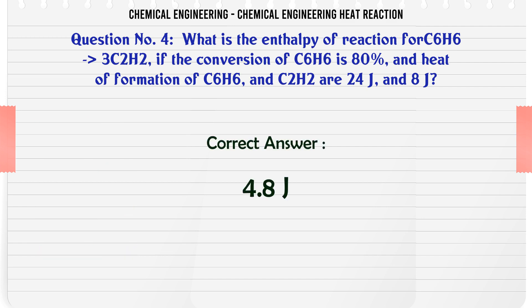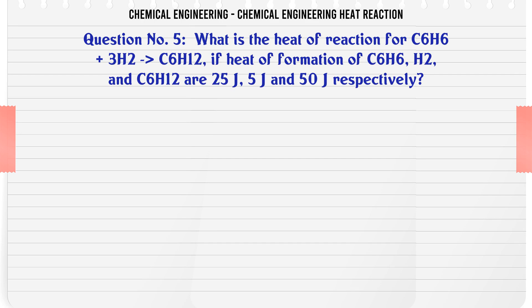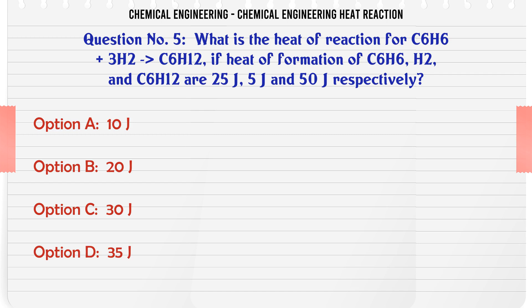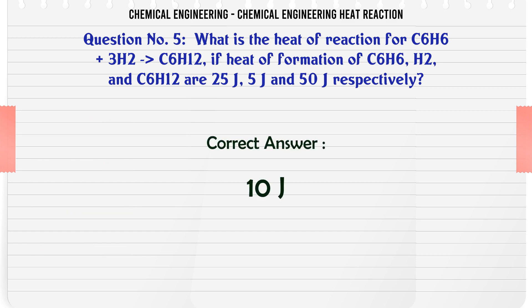What is the enthalpy change of a reaction for C6H6 + H2 → C6H12 if heat of formation of C6H6, H2, and C6H12 are 25J, 5J, and 50J respectively? A: 10J, B: 20J, C: 30J, D: 35J. The correct answer is 10J.